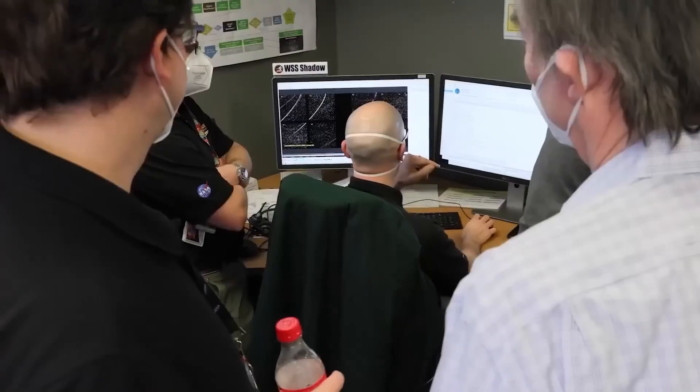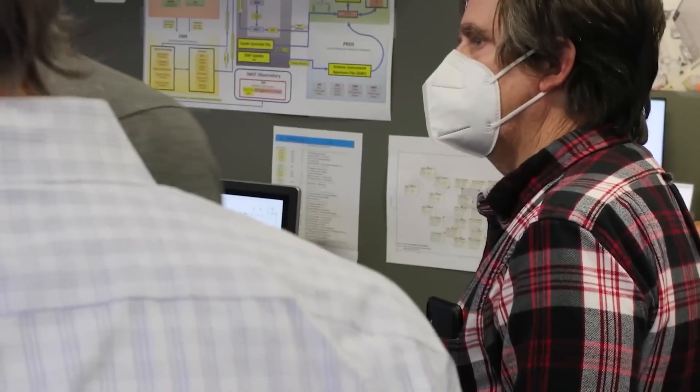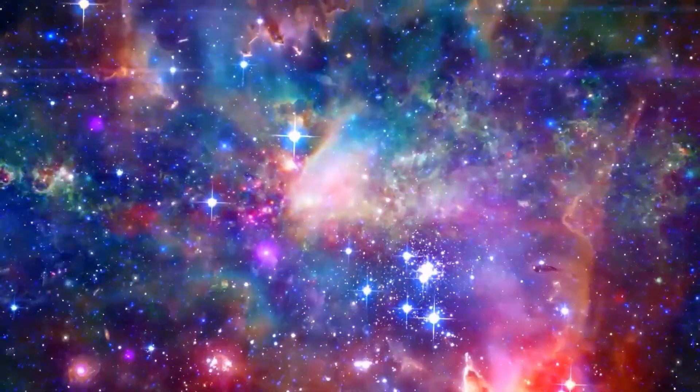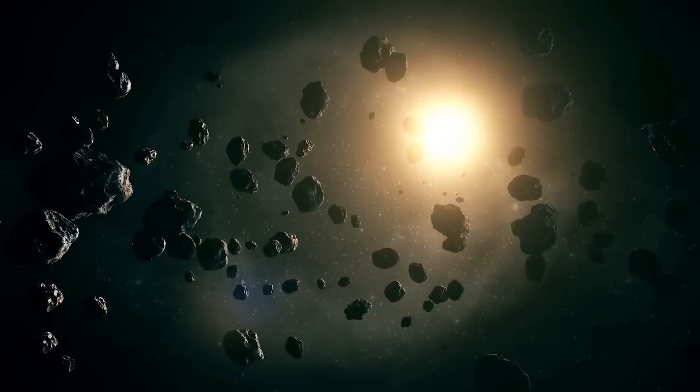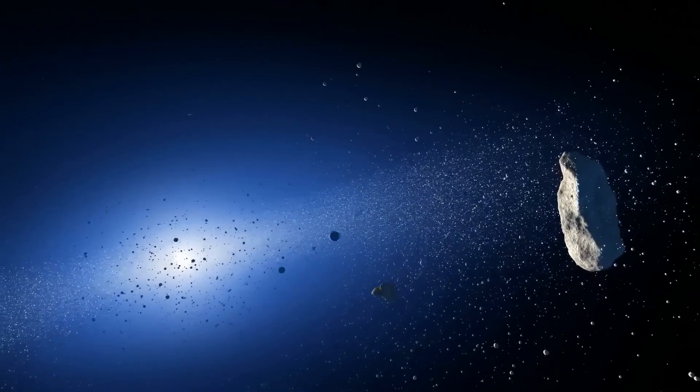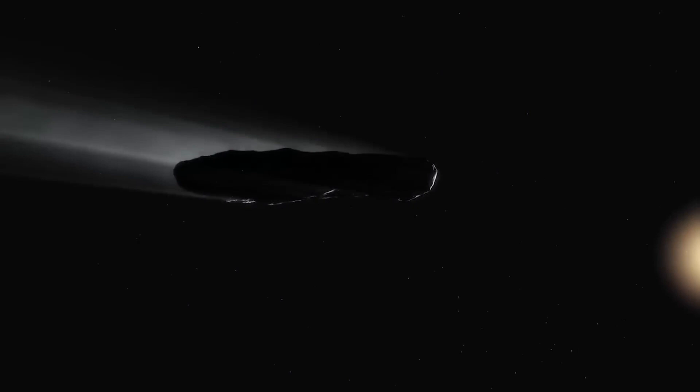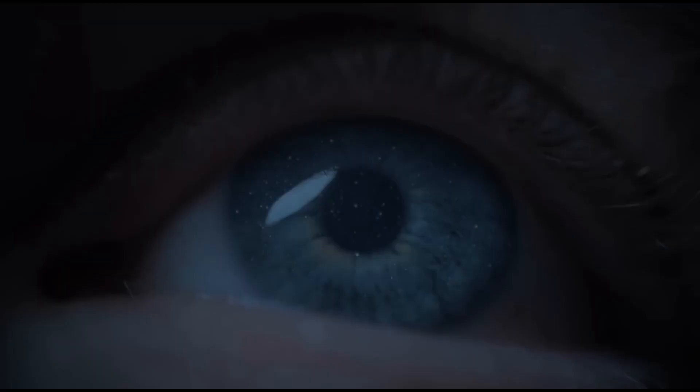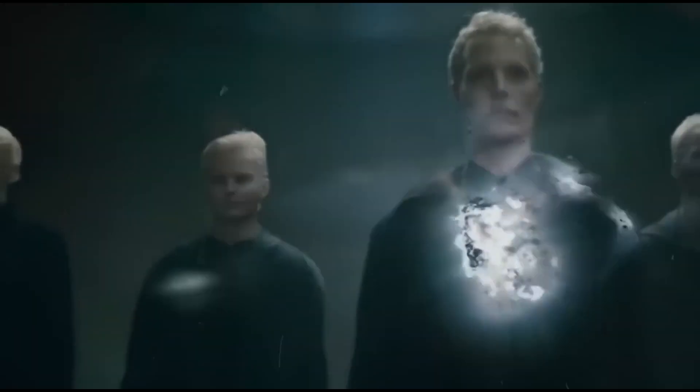Oumuamua, an object detected in space that could possibly have been extraterrestrial in origin, meaning from some sort of civilization. For ages, humans have wondered if we're the only ones in the vast universe. When we look up at the stars at night, we wonder if there are other beings out there hidden in faraway galaxies. But we never had much proof until Oumuamua showed up.